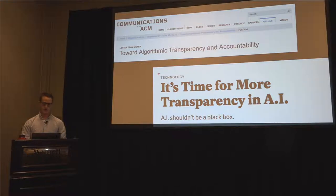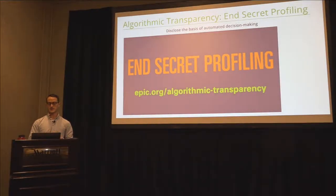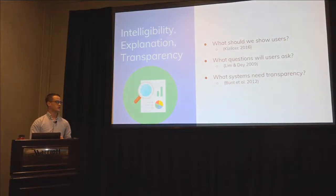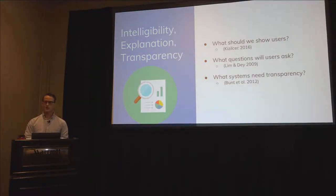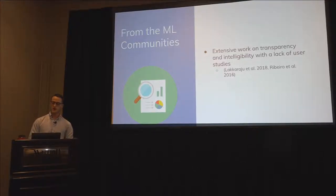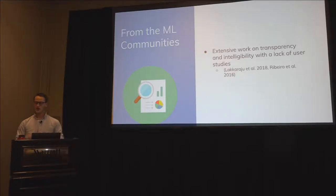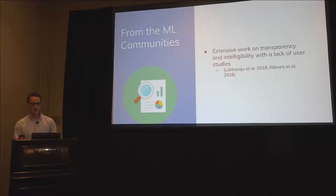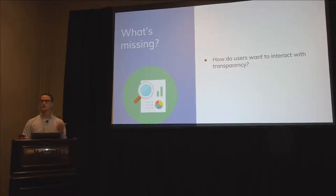We see the ACM has called for algorithmic transparency. Media outlets like Slate are saying it's time for more transparency. Policymakers and think tanks are saying we need to end secret profiling. In the literature, broadly under intelligibility, explanation, and transparency, people are asking what should we show users, what questions will users ask, and what kinds of systems need transparency. From the machine learning community, people take models and add explainability or visualization components without doing user tests to figure out if that's how people actually want to interact. That's something we feel is missing.